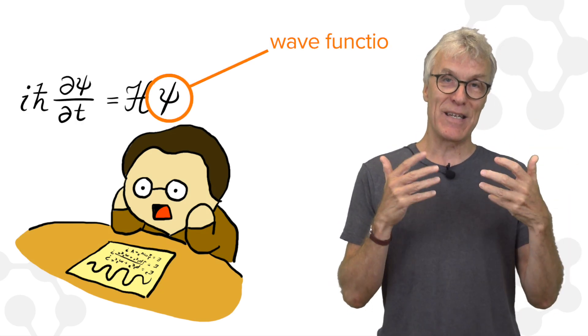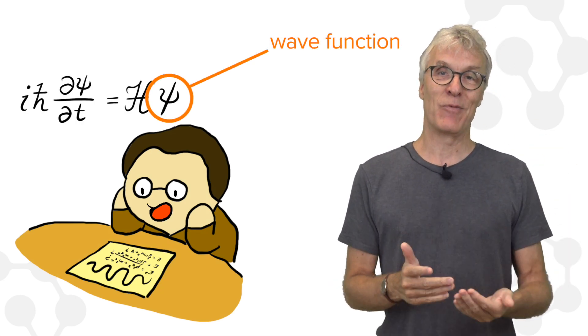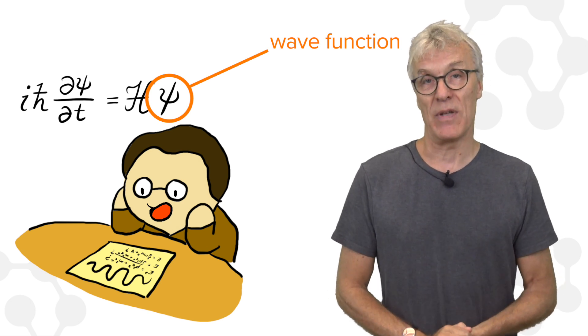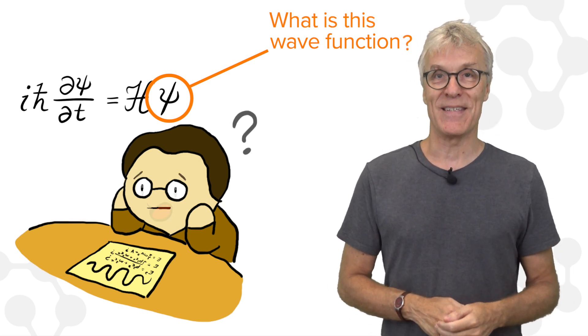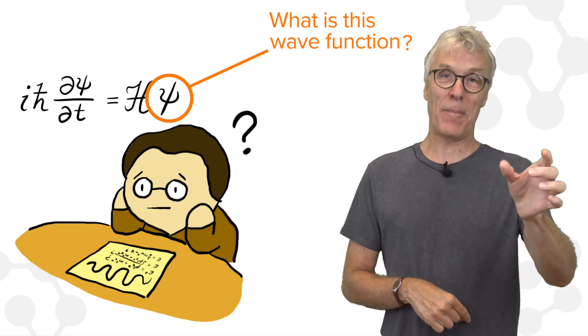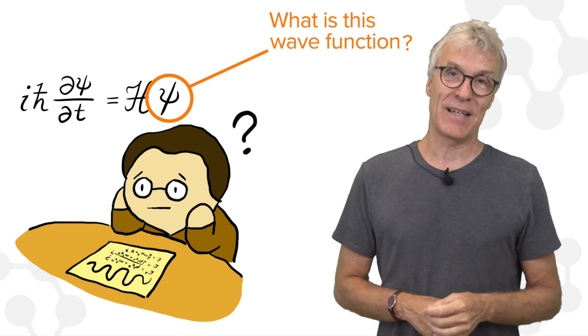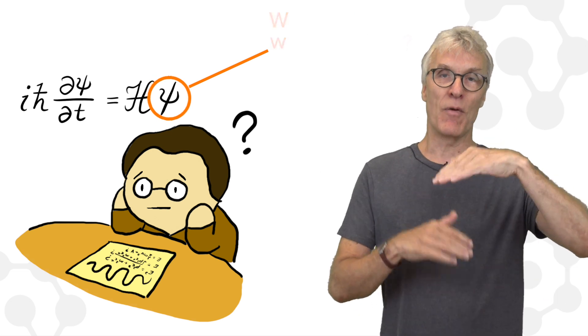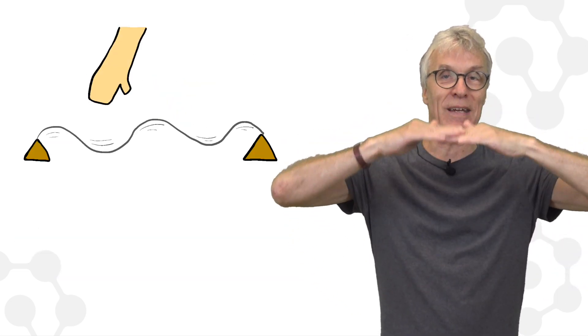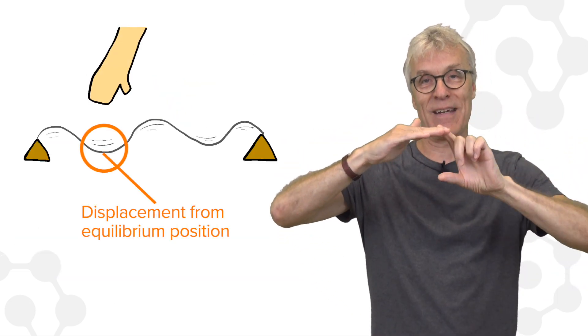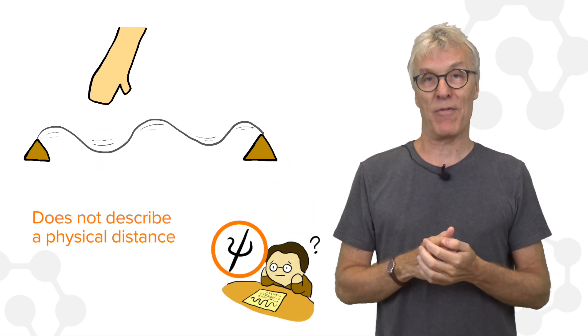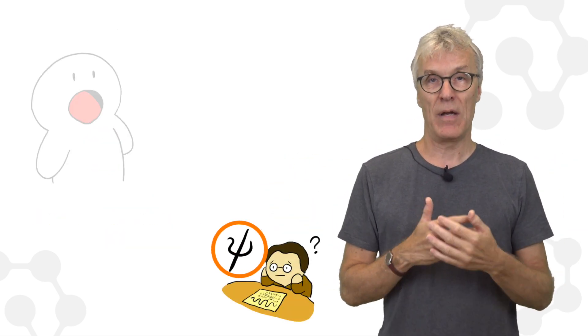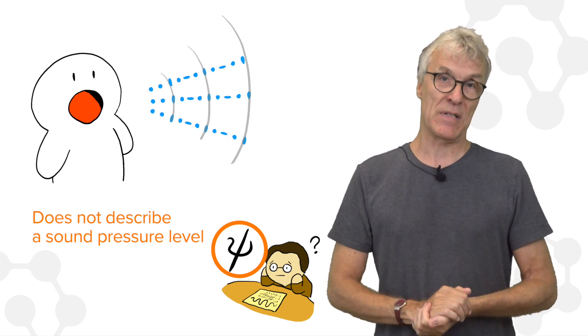So Schrödinger actually went home and he wrote down different wave equations. And when he solved his wave equation, he found agreement with some of the observations from the atomic world. That didn't mean that we know exactly what this wave is. He had written down a mathematical formula for an object that was not even a physical object. It was not clear what was the wavy thing.